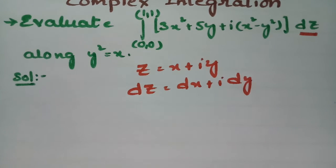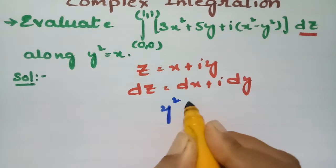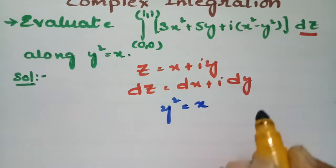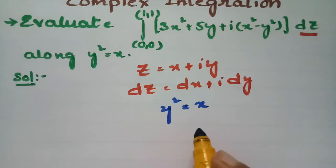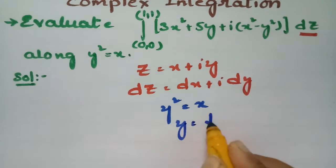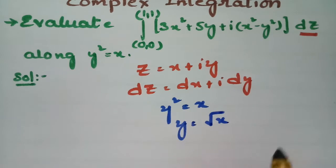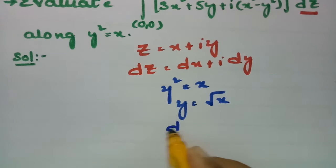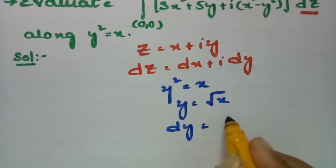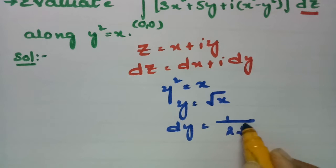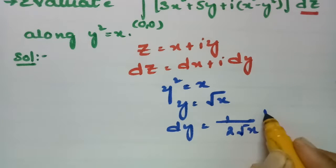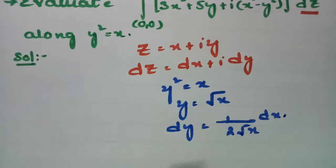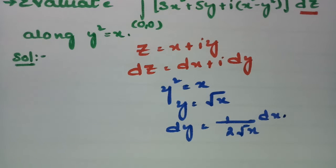The curve given is y² = x. So y = √x, and dy = 1/(2√x) · dx.